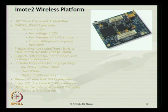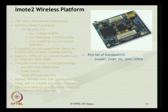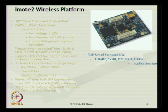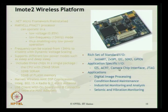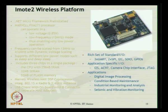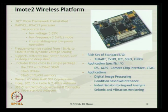The iMote2 includes a USB client with onboard mini-B connector and separate host adapters as built-in facilities. It has a reset set of standard input/output devices, and application-specific input/output devices are also available. It can connect a JTAG router as well as a camera chip interface to capture photographs based on underwater videography. It has a wide variety of applications including digital image processing, condition-based maintenance, industrial monitoring and analysis, and seismic and vibration monitoring, which are mostly useful in marine structures.